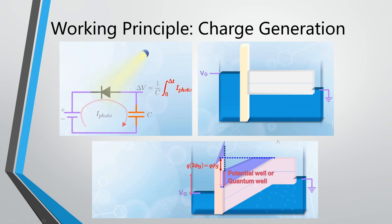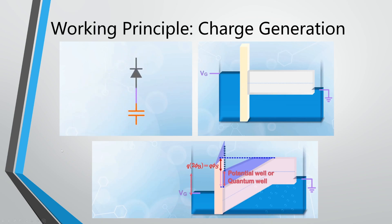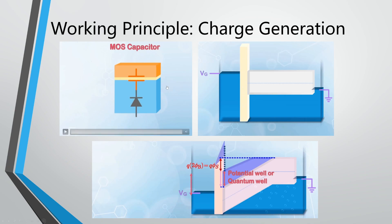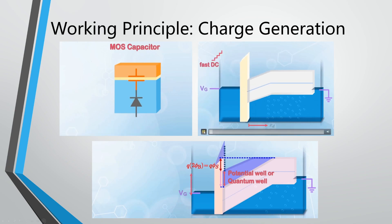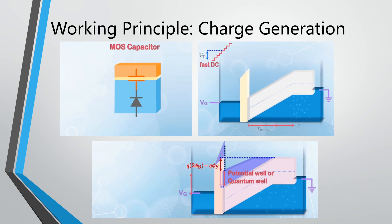Then we put a capacitor next to it, which acts as an integrator. Charges accumulate in the capacitor to indicate the light intensity. This forms a MOS capacitor, which stands for metal-oxide-silicon. If a fast DC voltage is applied to the gate terminal, higher than the threshold voltage, we break the thermal equilibrium and deplete holes further away than their maximum distance — called deep depletion mode.